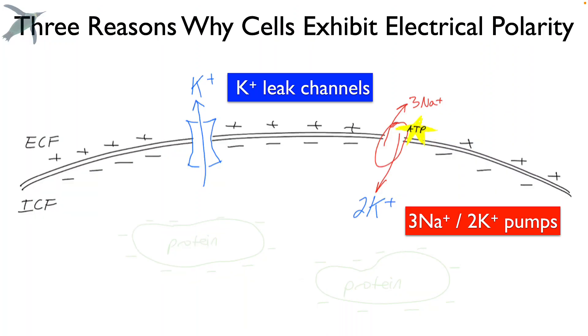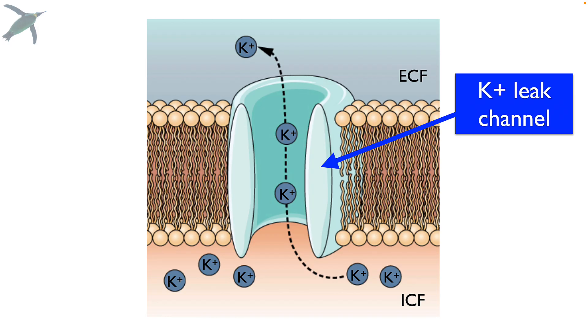The second reason why cells exhibit this electrical polarity is because of the presence of potassium leak channels. These are basically like little pores through which potassium ions can flow in the direction that they want to go, which is usually out of the cell. As they move, they take their positive charges with them, thus making the inside of the cell more negative.